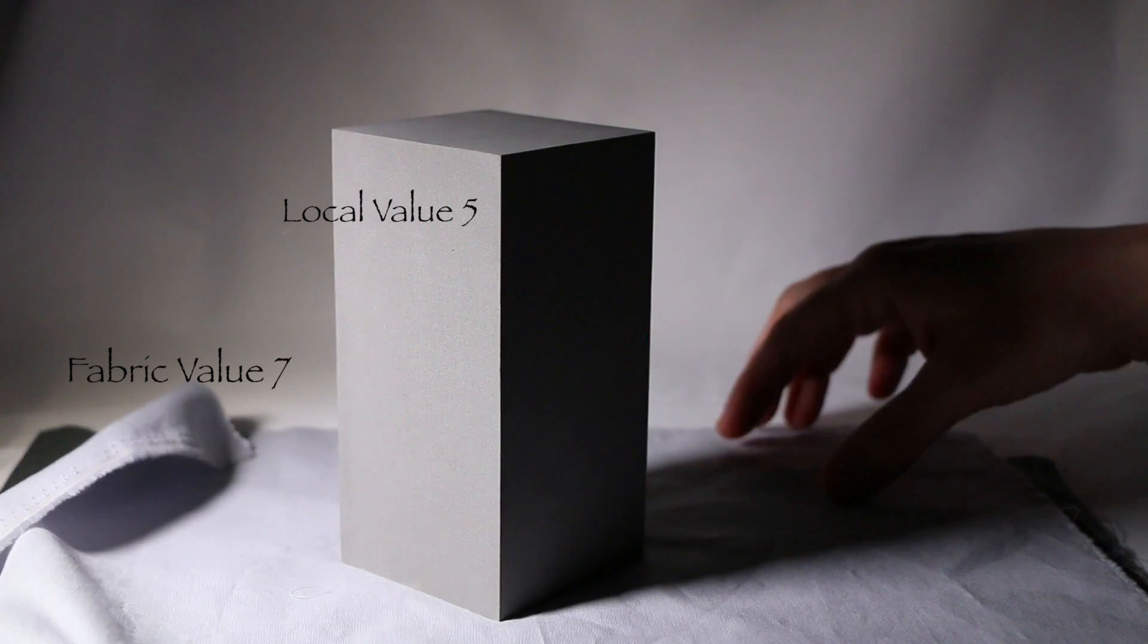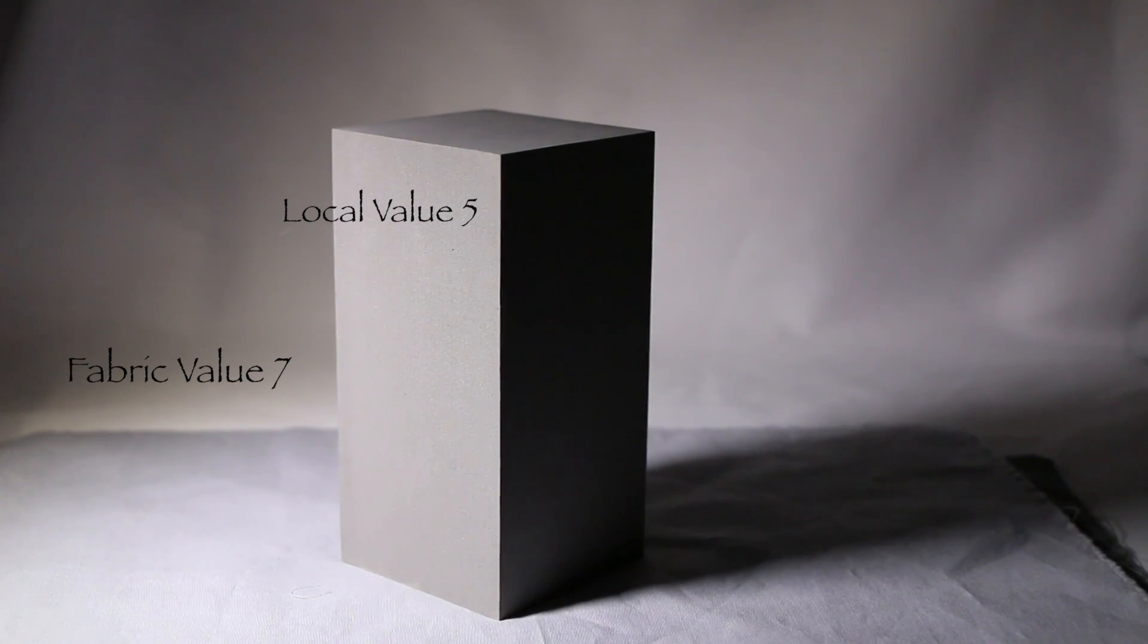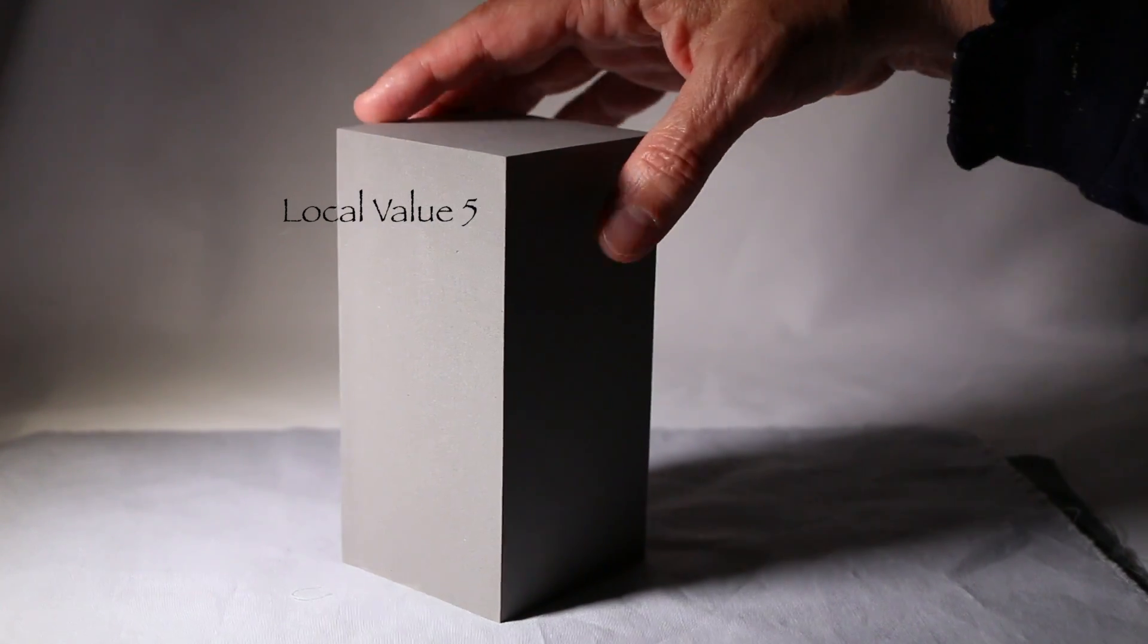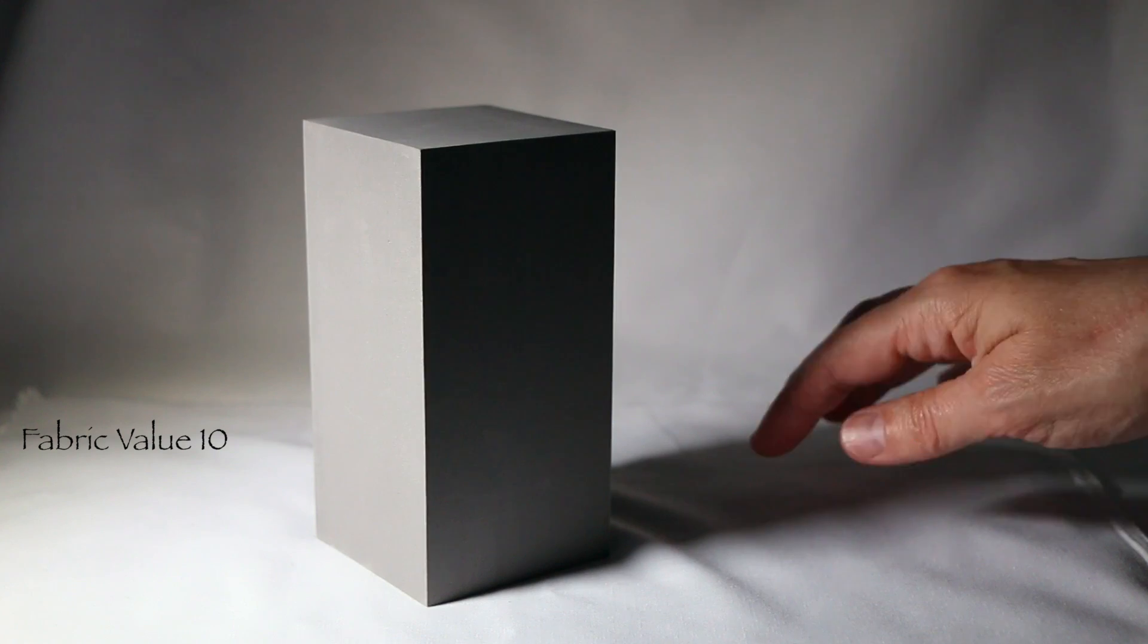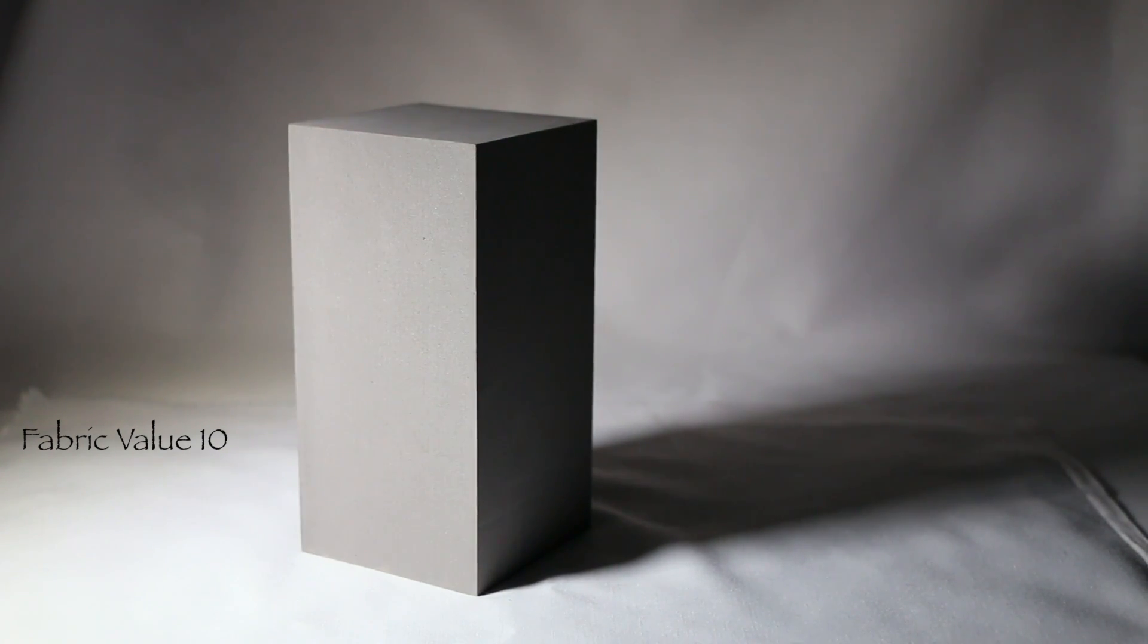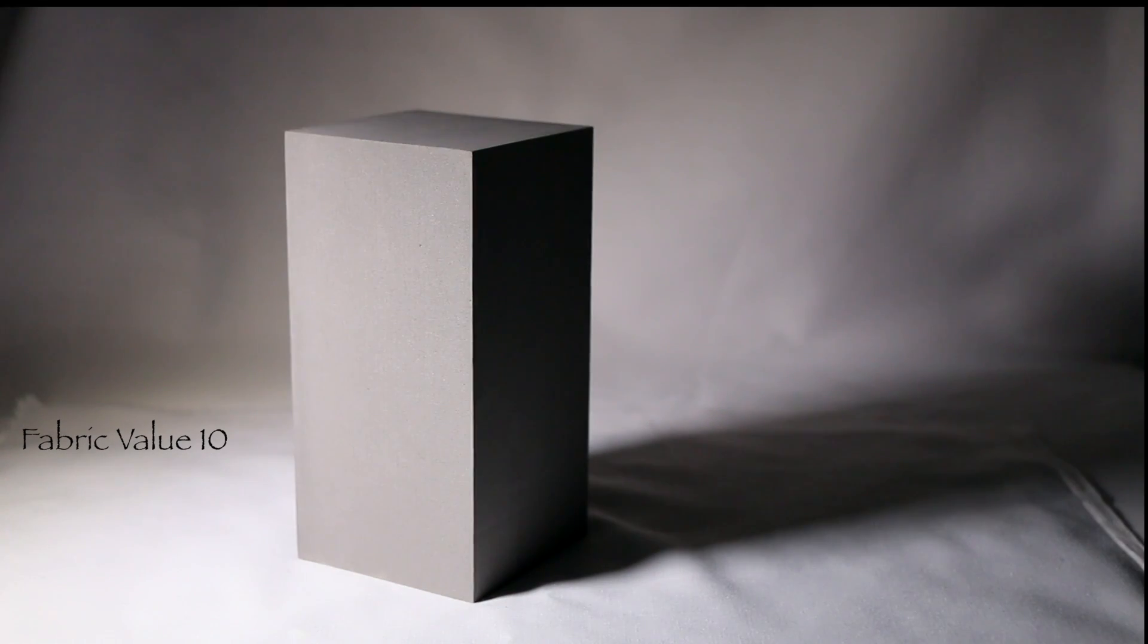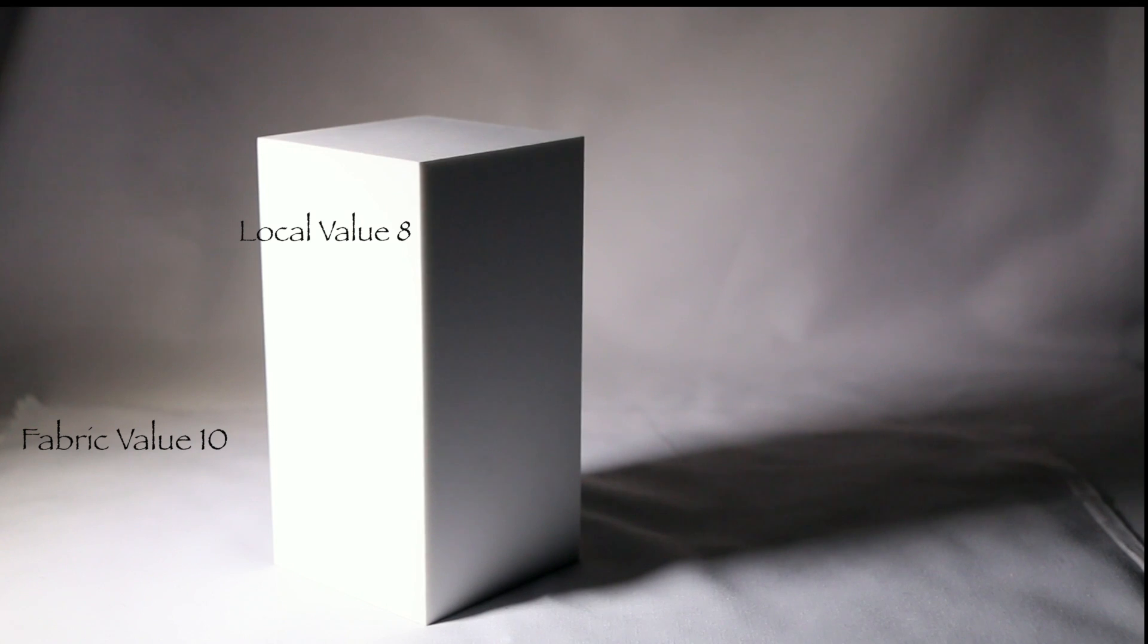Now when you get to fabric value 7, you can notice the reflected light coming in. Much higher amount. And now let's go to value 10 which is white. And look at how much stronger the reflected light is. See the difference between the two? Kind of amazing isn't it? The reflected light even is brighter in there.